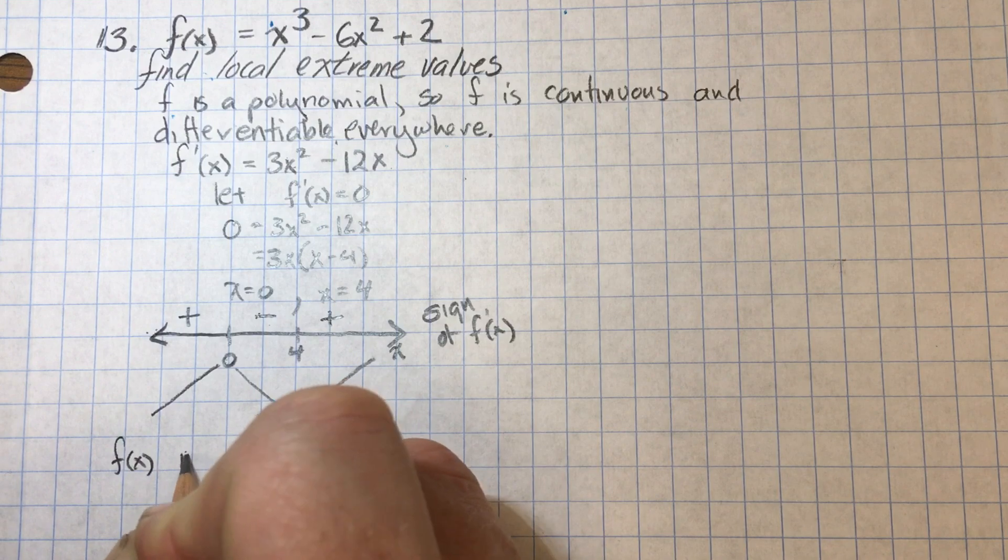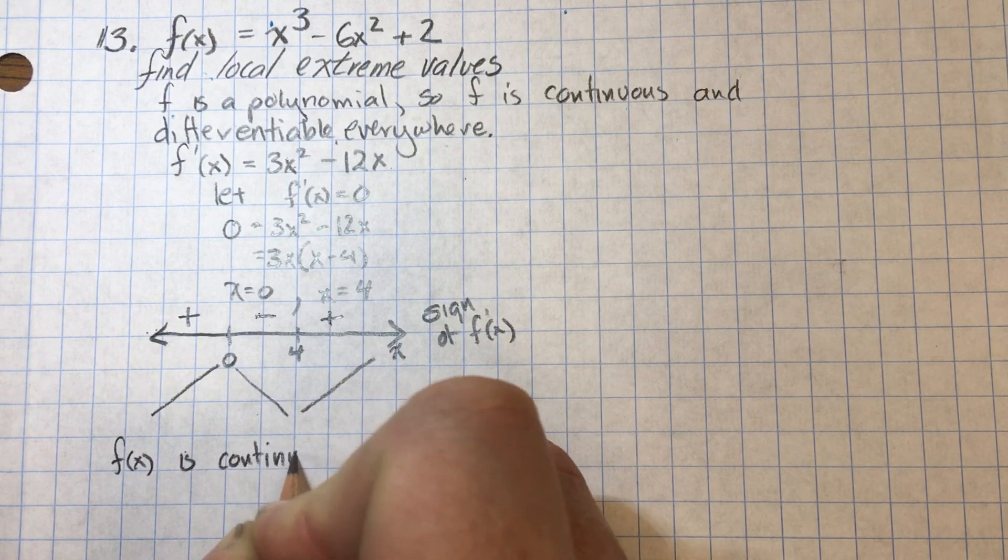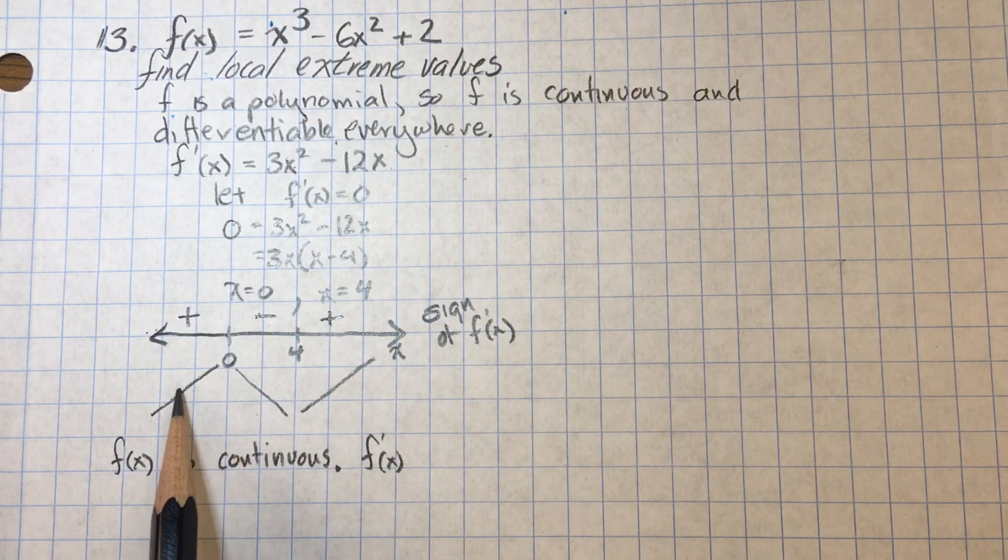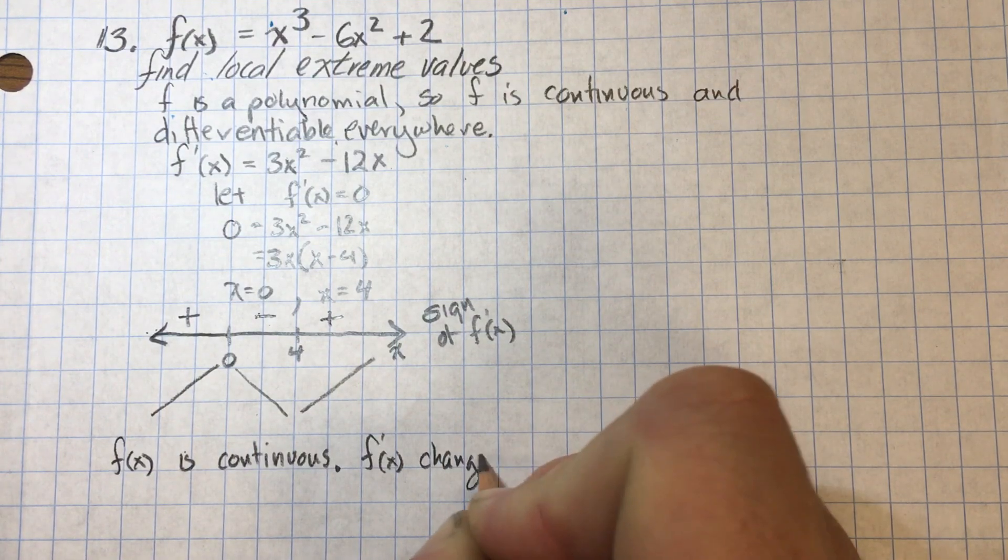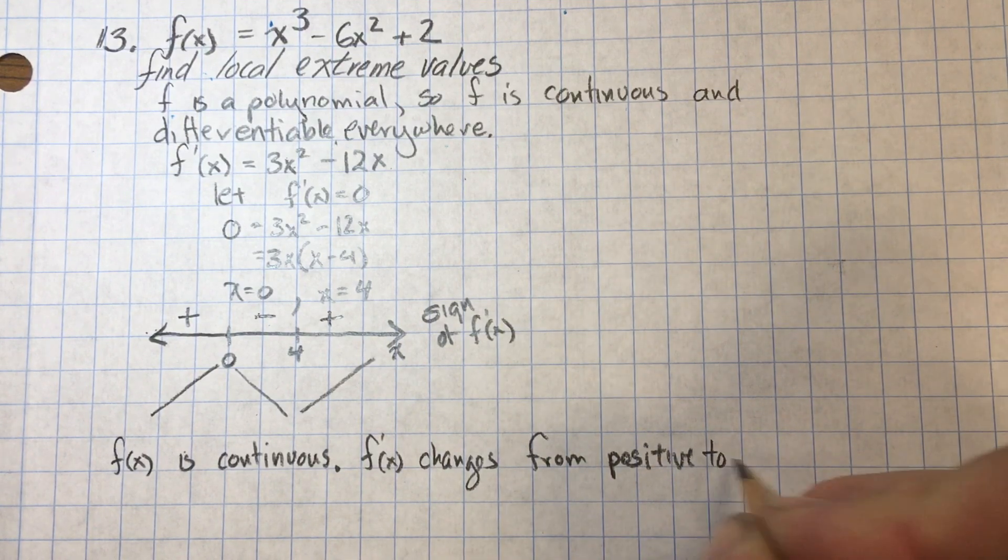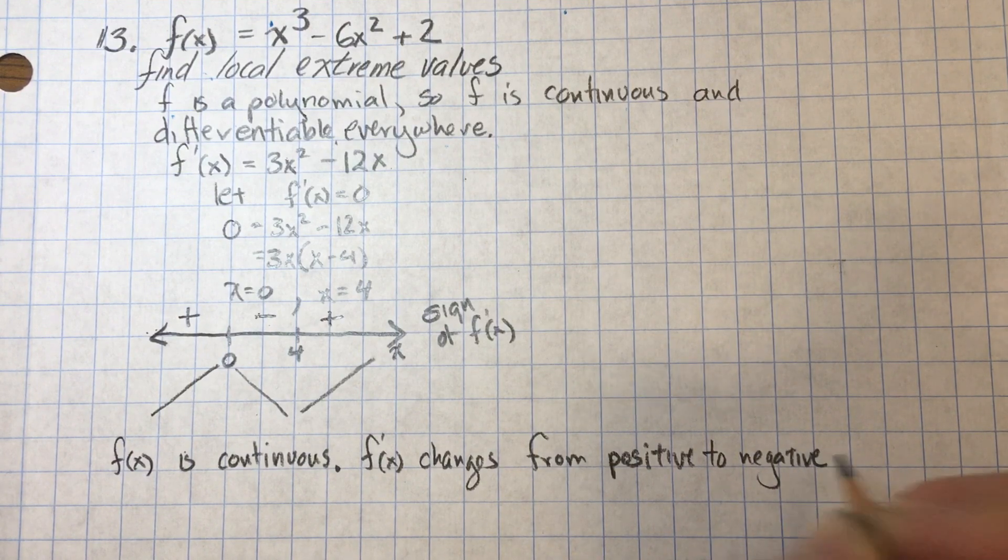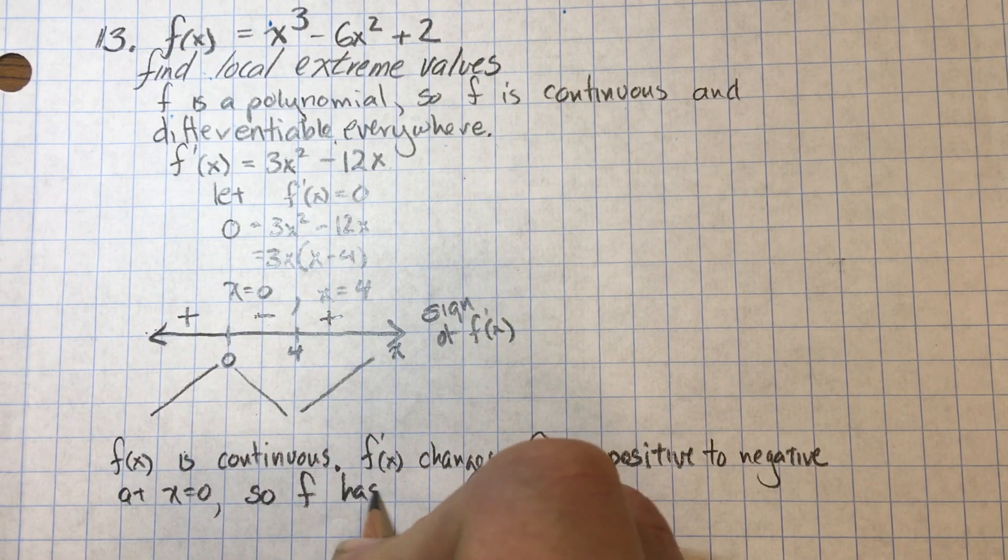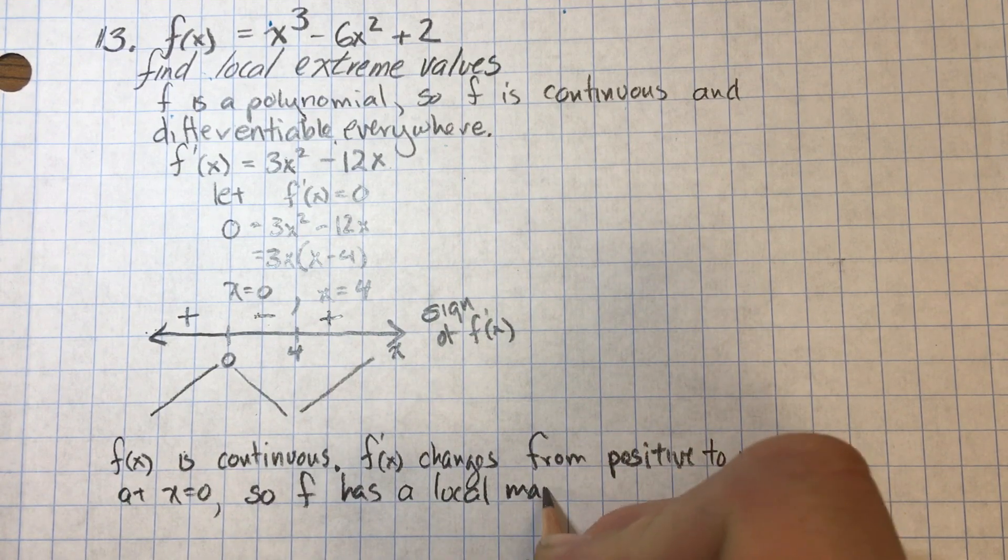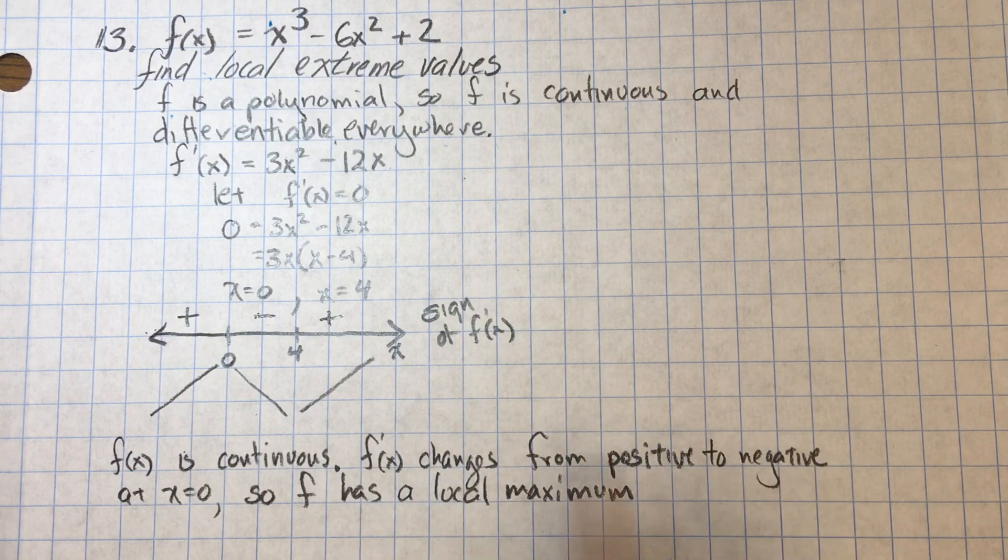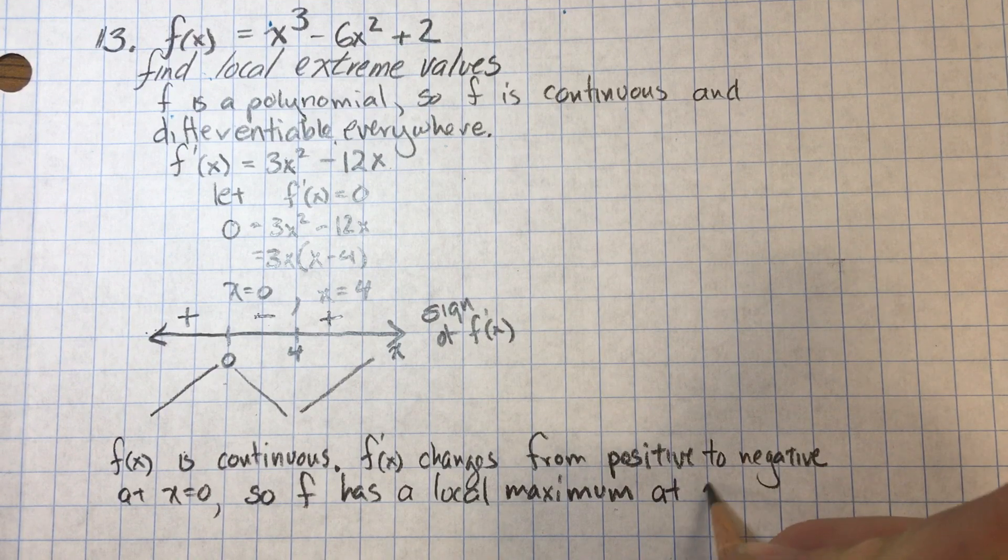So we're going to start off with F is continuous. I know we already wrote that, but it's super important. So I'm going to reiterate again. Then I'm going to say F prime changes from positive to negative. Where? And we have to say where. Where did F prime change from positive to negative at X equals zero? So F has a local maximum. Some people think they can stop here. They can't. Right now, my sentence says F prime changes from positive to negative at this specific place. So F has a local maximum somewhere. No, no, no. F has a local maximum also at X equals zero.